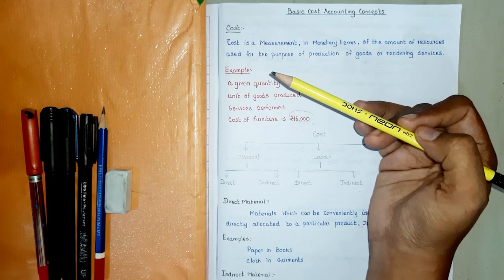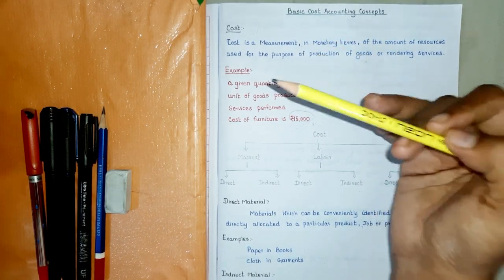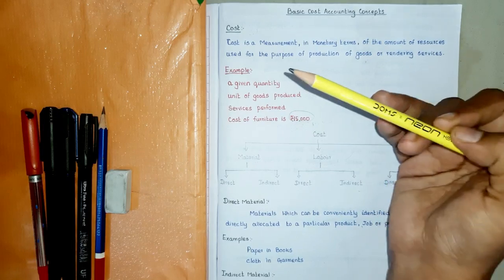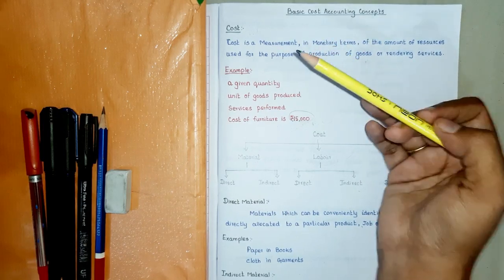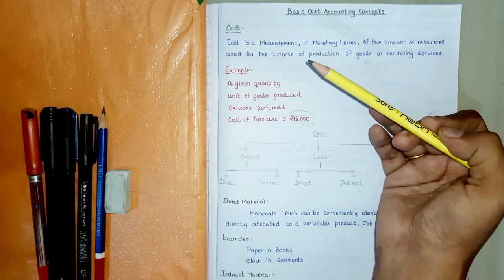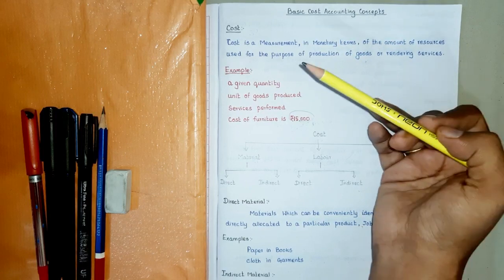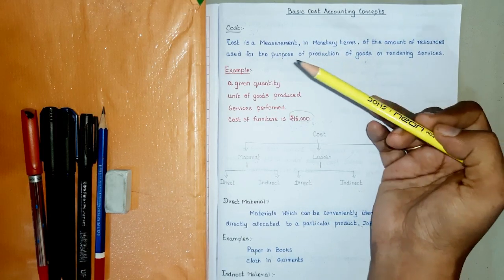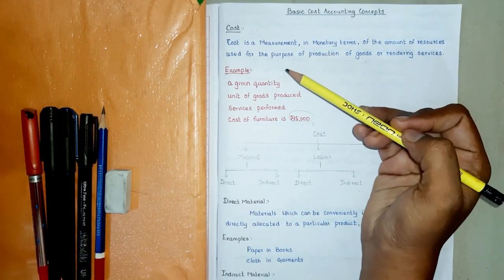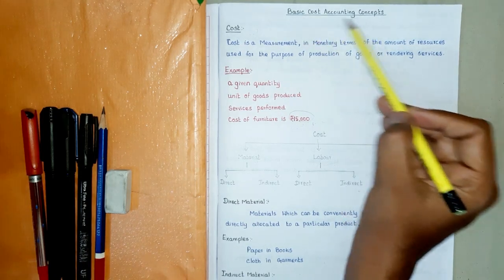It also reveals its financial position on a particular date, normally as on the last date of the financial year. It may not be sufficient for the management to plan the future and take decisions regarding its operations and control. Hence the need for development of a specialized branch of accounting arises, which results in cost accounting.